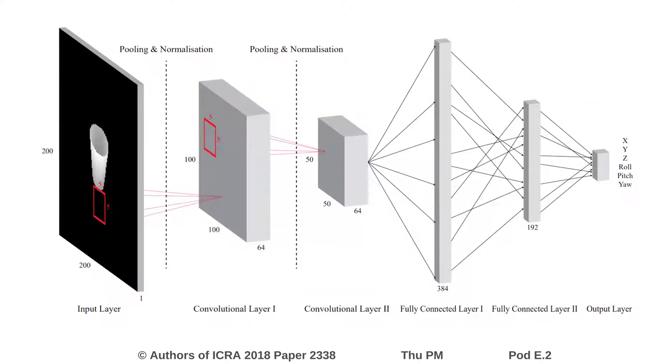Finally, this is the convolutional neural network. It contains two convolutional layers and three fully connected layers. You can find more details in the paper.